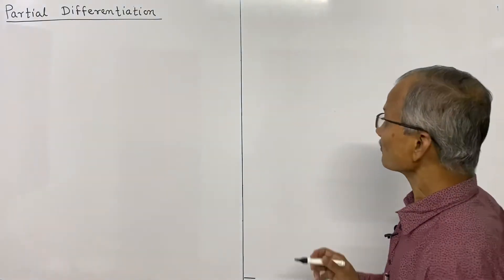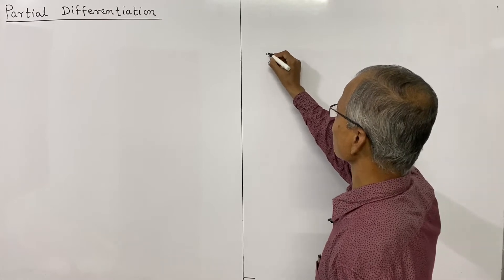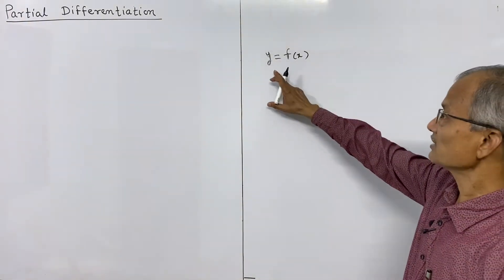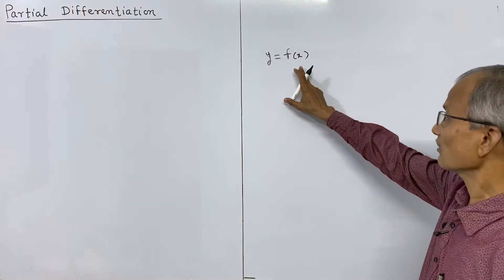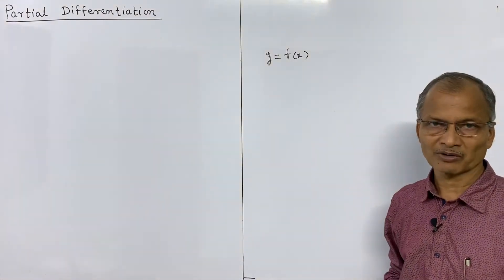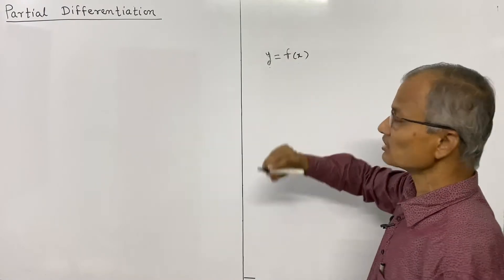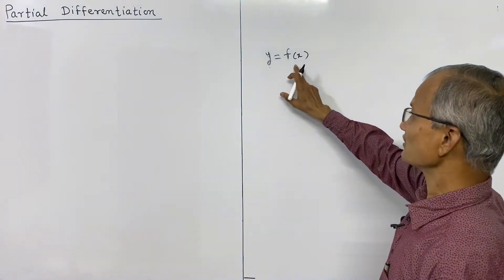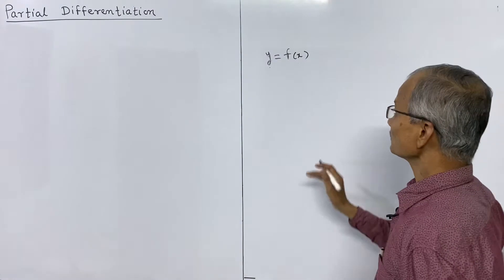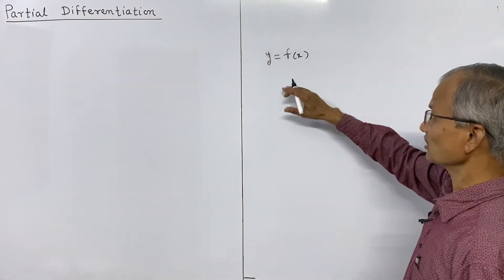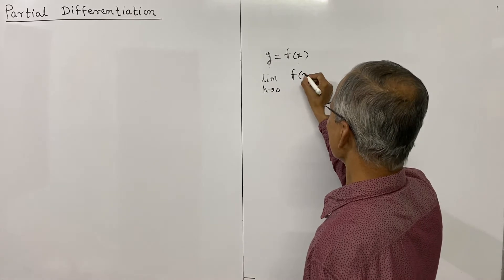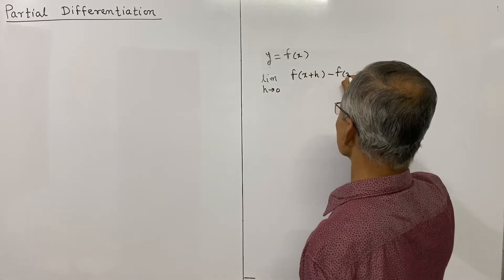For total differentiation, we have a function — say y is a function of x, denoted as y = f(x). This is a function of a single variable and we differentiate y with respect to x. The derivative measures the rate of change of one variable with respect to the other. So y is the dependent variable and x is the independent variable. If there is a change in x, there will be a corresponding change in y, and those changes are measured by derivatives. We have the limit as h tends to 0 of [f(x+h) − f(x)] / h.